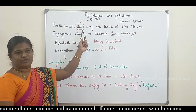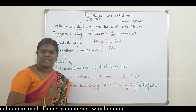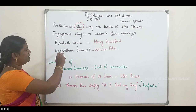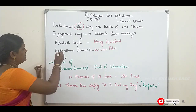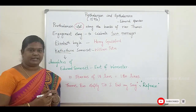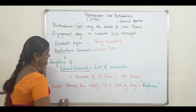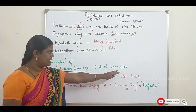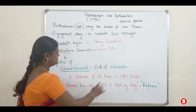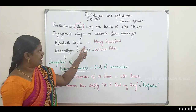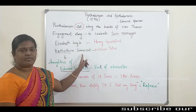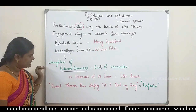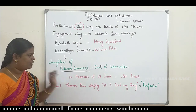It is set as an engagement song to celebrate twin marriages. Two swans are the two brides — the twin marriages of Elizabeth Boyle and Catherine Somerset. They are the daughters. Edward Somerset is the Earl of Worcester. The bride and groom pairs are: Joan and Catherine Somerset from Elizabeth Boyle, Henry Guilford and William Peter, and also Catherine Somerset married William Peter.